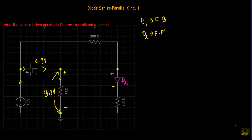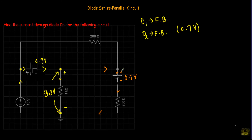Since diode D2 is in forward bias, I can replace it with a 0.7V voltage source. Current in this branch flows from the higher-potential terminal through D2 and the 250Ω resistor. The same current I flows through both D2 and the 250Ω resistor. Now I will apply KVL in this loop to calculate current I.